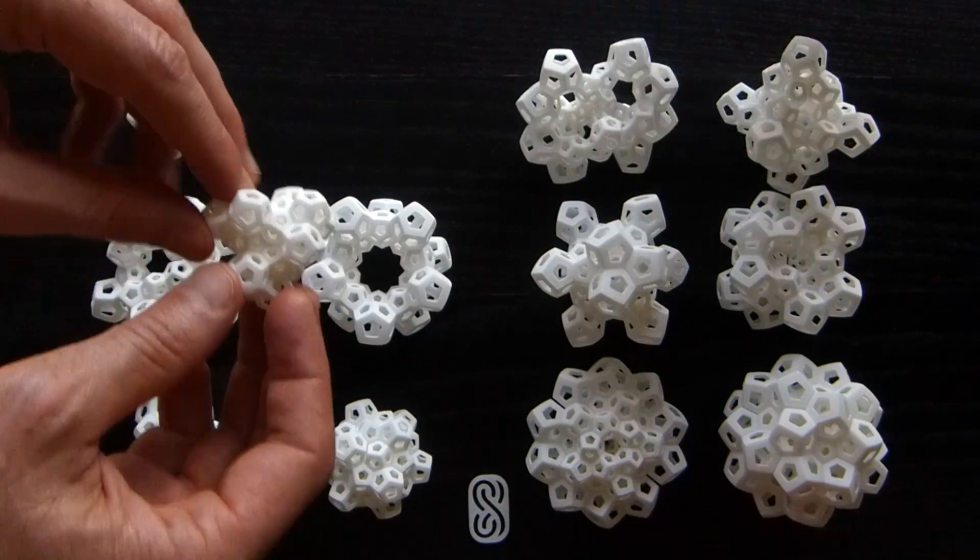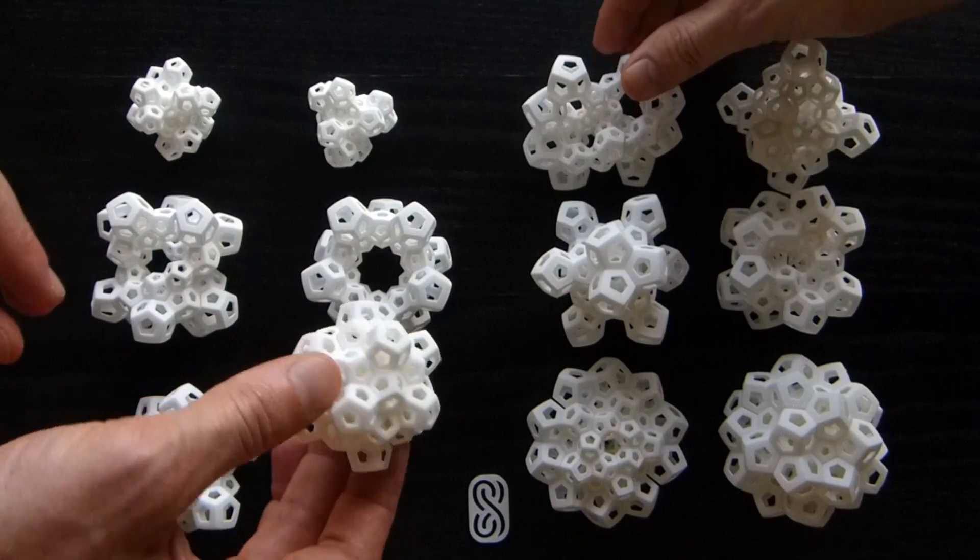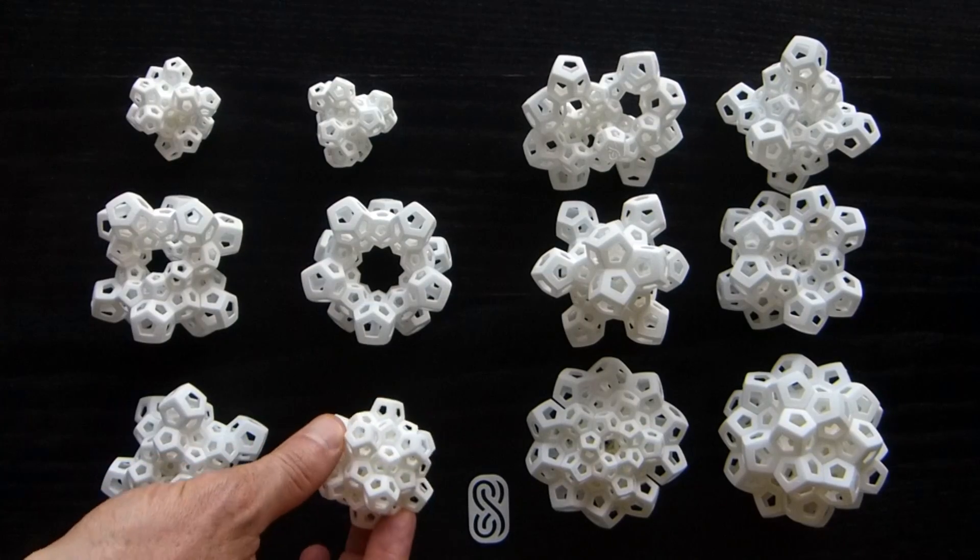He calls this the ether. The ether was supposedly made out of dodecahedra, just like our puzzles. This is quintessence.